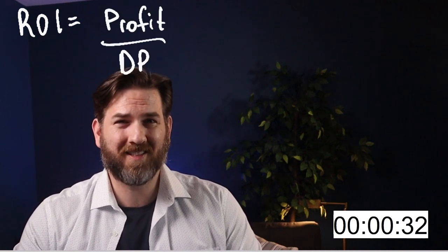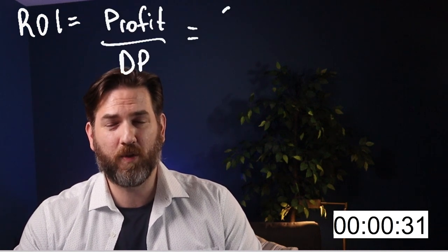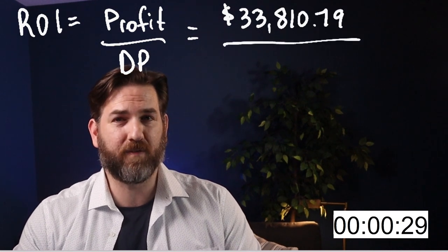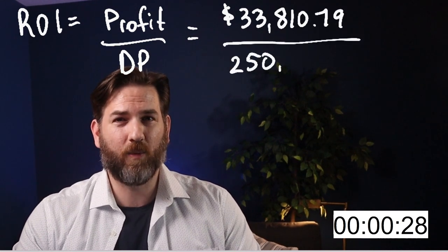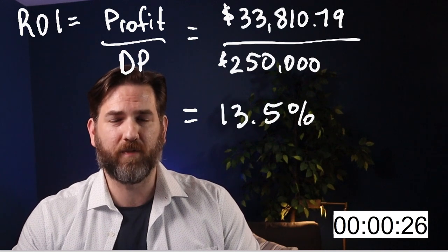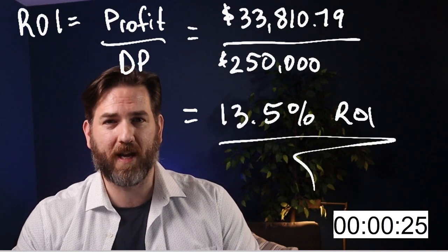Now that we know our net profit, we can calculate our return on investment — also called cash on cash return. We take our $33,000 annual profit and divide it by the money we put in to buy the property, which is $250,000. That gives us a 13.5% return on investment, or cash on cash return.